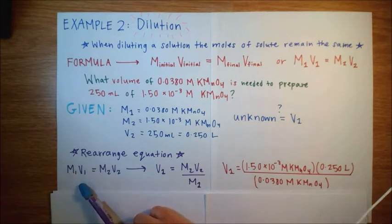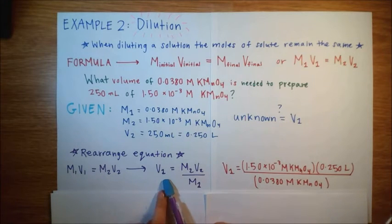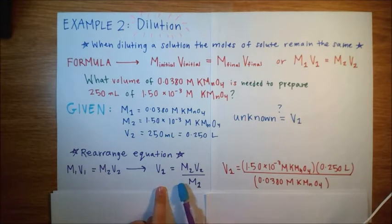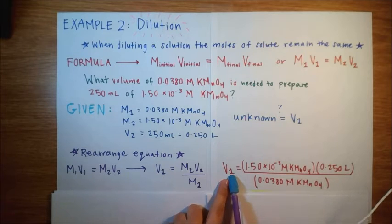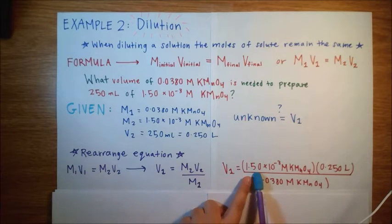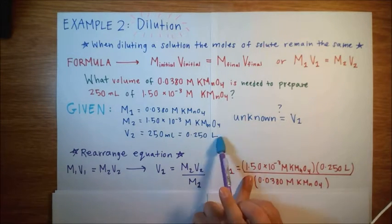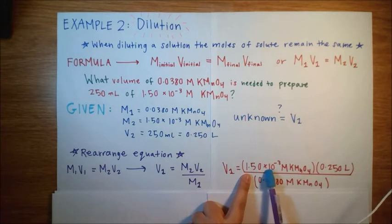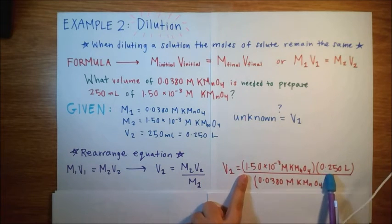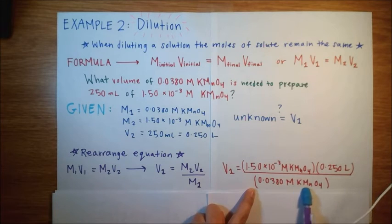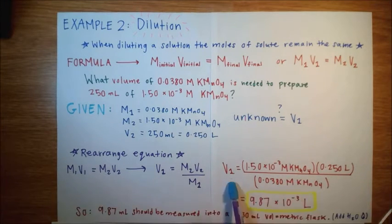We can say that M1 V1 equal to M2 V2 can be rearranged to V1 equals M2 V2 over M1. All you have to do is plug in the given values. So V1 equals M2. This is the M2 value which we said right here. So this is going to be the molarity of the final solution. V2 is 0.250 liters and M1 is the initial molarity. So when you calculate that, V1 is equal to 9.87 times 10 to the negative third liters.